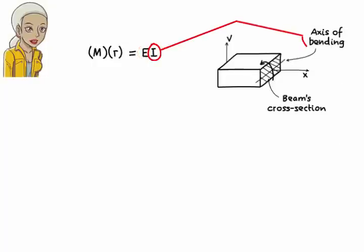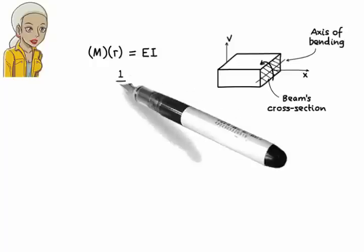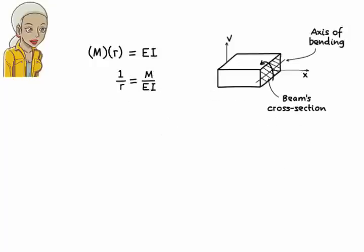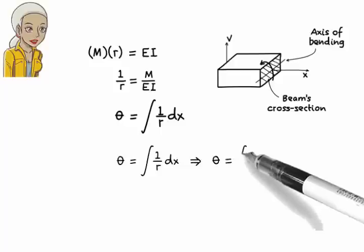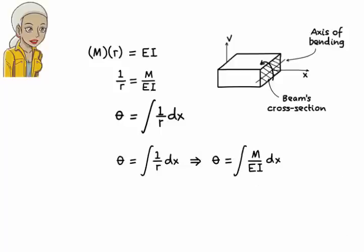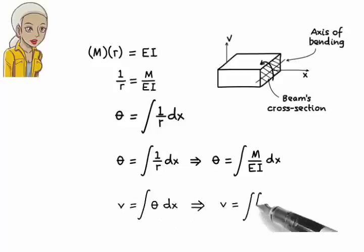where e is the modulus of elasticity of the material, and i is the moment of inertia of the cross section of the beam about the axis of bending. Now, let's rearrange this equation. Let's rewrite it as 1 over r equals m over ei. This is the relationship between r and m. If we replace 1 over r with m over ei in this equation, we get theta equals integral of m over ei dx. And since v equals integral of theta dx, then we can write v equals double integral of m over ei d²x.